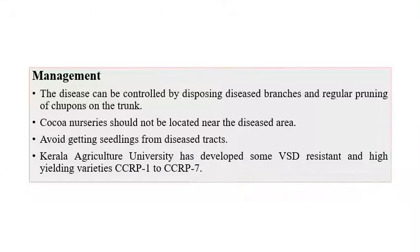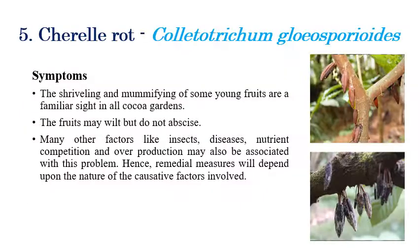For management of Vascular Streak Dieback, diseased branches should be pruned regularly. Cocoa nurseries should not be located near diseased areas — place nurseries far from cultivated diseased areas. Avoid obtaining planting material from infected areas. Kerala Agricultural University has developed VSD-resistant and high-yielding varieties: CCRP1 and CCRP7.